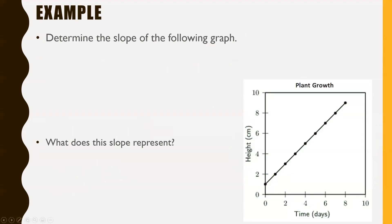The question says: determine the slope of the following graph. Slope is just rise over run. You can pick any two points on this — it doesn't matter. You can pick the first two, the first and last, or any combination. When you have a linear relation, because it goes up by the same amount each time, the slope is going to be the same everywhere. Personally, I always like picking my first point and my last point.